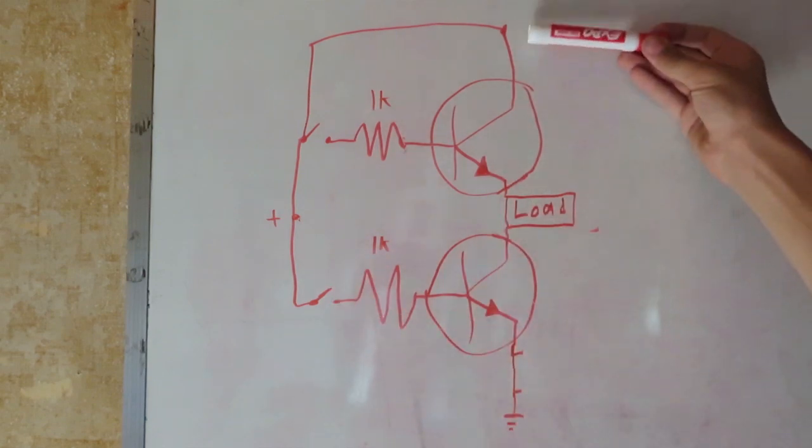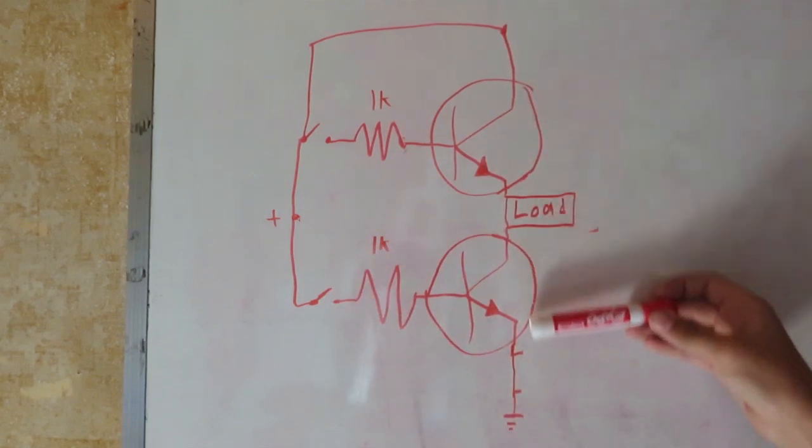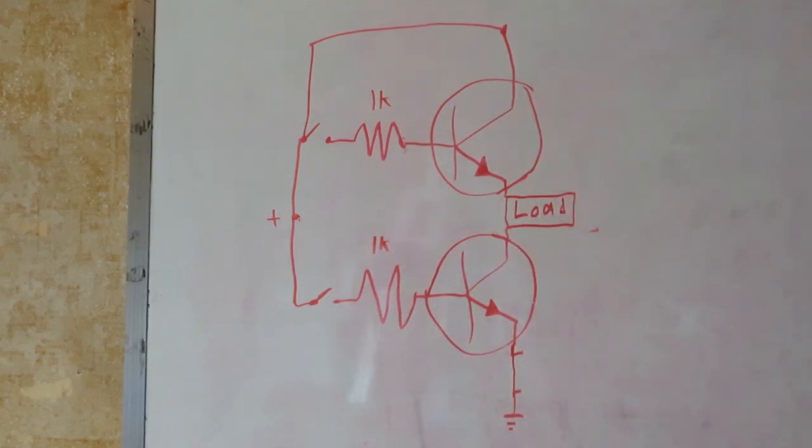So when you turn both transistors on, it can flow through the positive, through the load, and then down to the negative. So now for some examples with snap circuits.